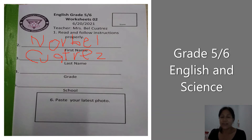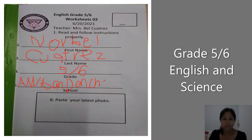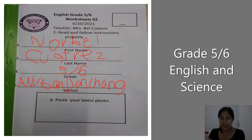Let's go to grade — your grade is five, slash six A. And here, school: you write Ano Ban Dan Chang's school. In the box, you're going to paste your latest photo. That is all about the first page of the worksheet.